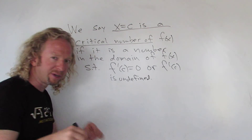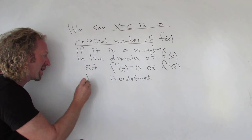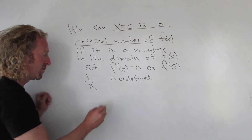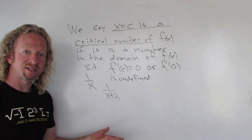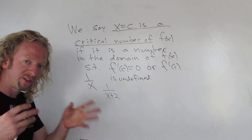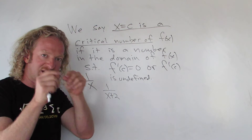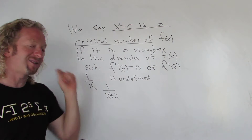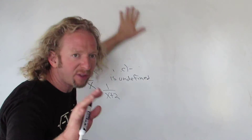So a critical number is a number in the domain of the function where the derivative is zero or undefined. For example, for 1/x, zero could never be a critical number because zero is not in the domain. For 1/(x+2), negative two could never be a critical number. Vertical asymptotes can never be critical numbers because at those numbers the function is undefined.